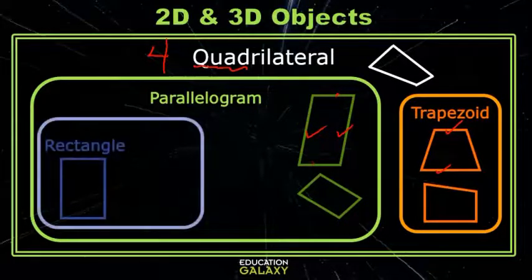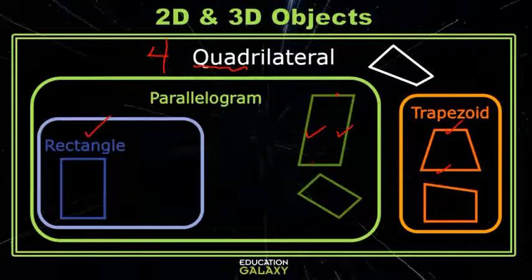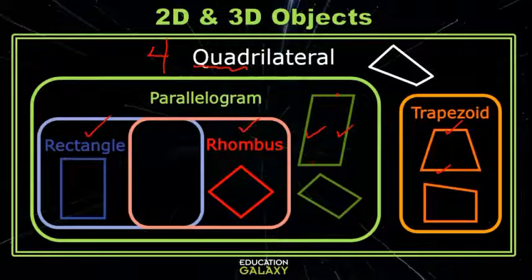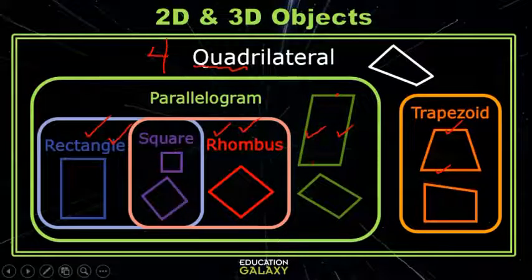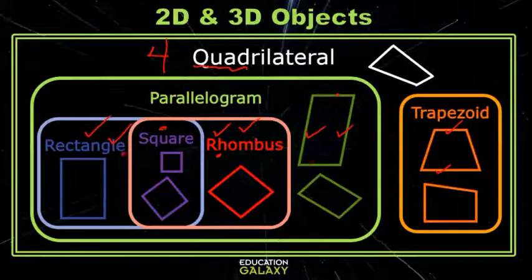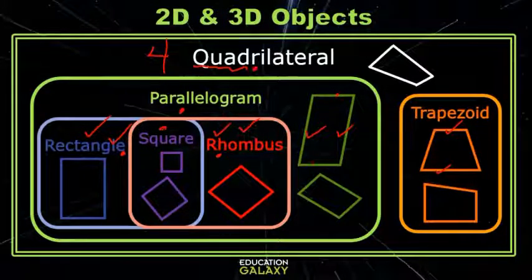Parallelograms with four right angles are called rectangles, and parallelograms with four congruent sides are called rhombuses. If a parallelogram has four right angles and four equal sides, it is called a square. Now remember, a square can also be called a rhombus, a rectangle, a parallelogram, and a quadrilateral — it belongs to all of these groups.